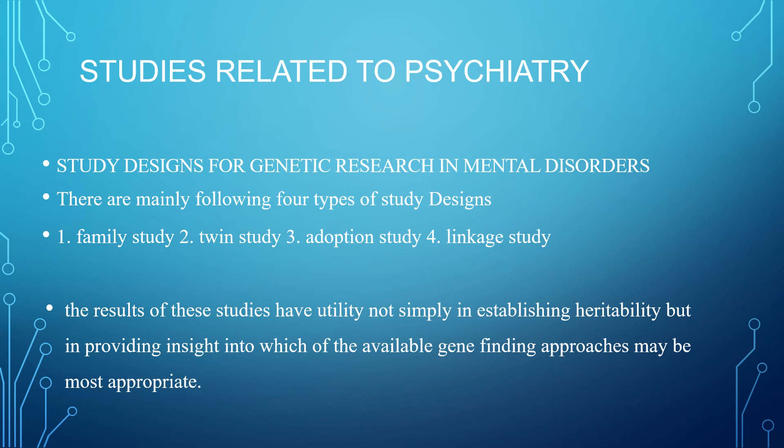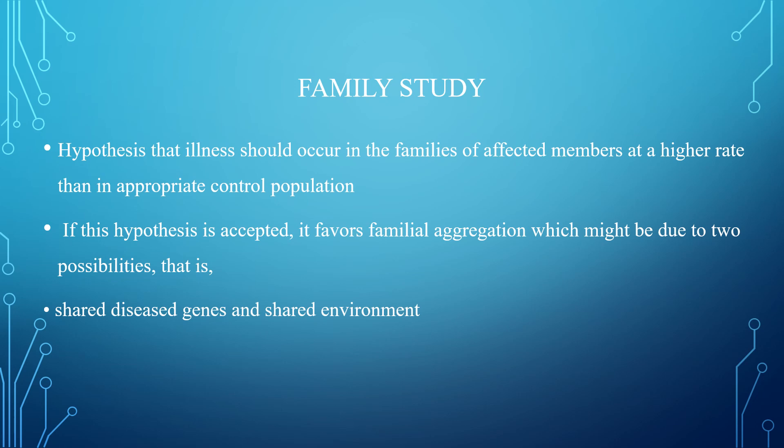Studies related to psychiatry which involve genetic concepts include family study, twin study, adoption study, and linkage study. The results of these studies have utility not simply in establishing heritability but in providing insight into which available gene-finding approaches may be most appropriate. Starting with the family study: it hypothesizes that illness should occur in families of affected members at a higher rate than in appropriate control populations. If this hypothesis is accepted, it favors familial aggregation, which might be due to two possibilities: shared disease genes or shared environment.